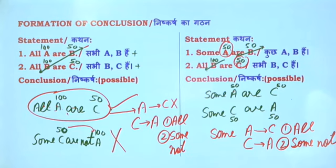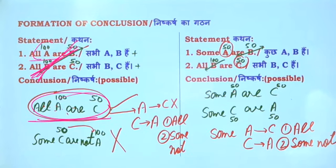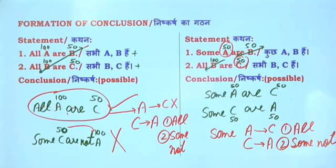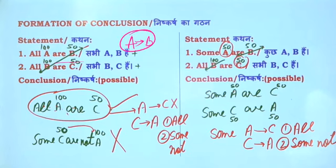We will see the formation of conclusions. Here we have two statements: All A are B and All B are C. The value is 150-150. If you see All A are C — that is the right statement. 'Some A are not C' will be wrong because a negative conclusion cannot come when both statements are positive. In all cases, A to B statements will be wrong.